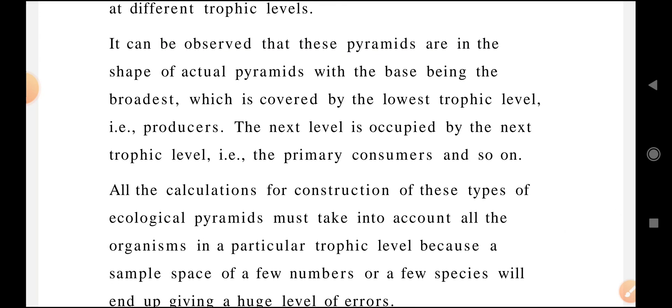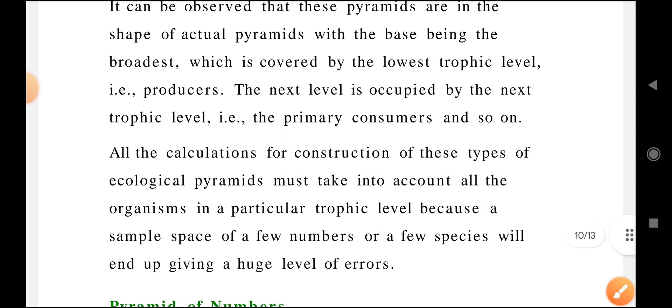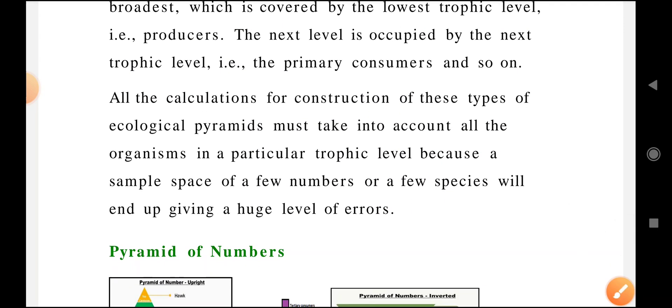The base is covered by the lowest trophic level, that is producers. The next level is occupied by the next trophic level, that is primary consumers, then secondary consumers and so on. The producers will be at the bottom.